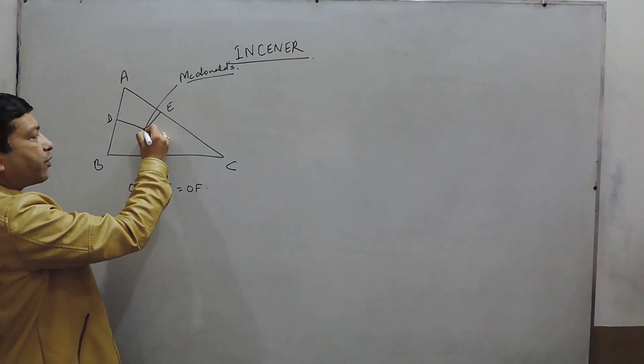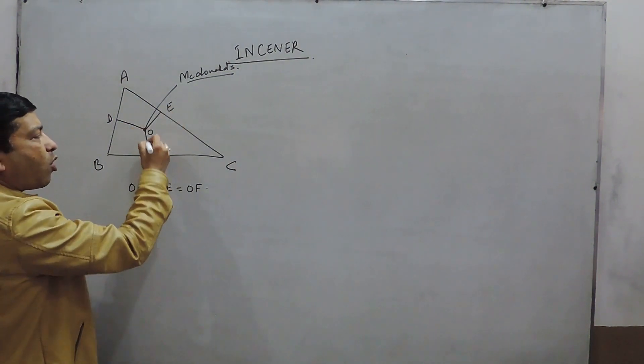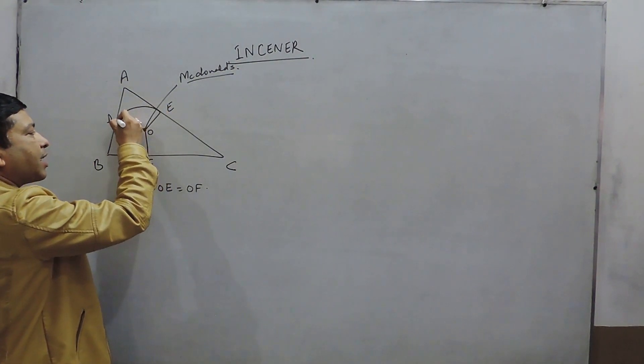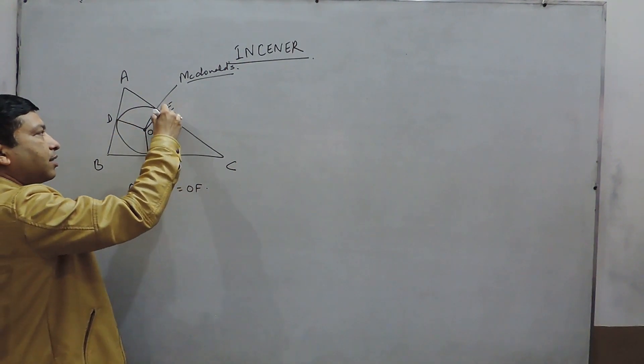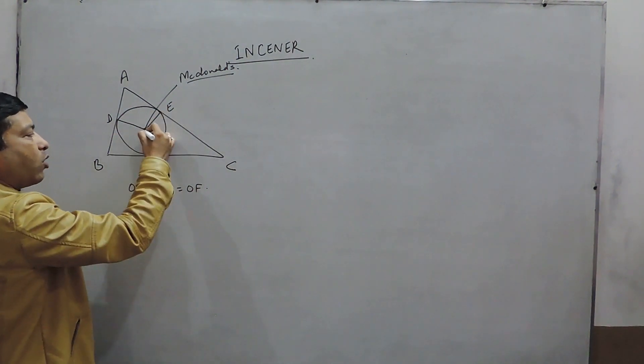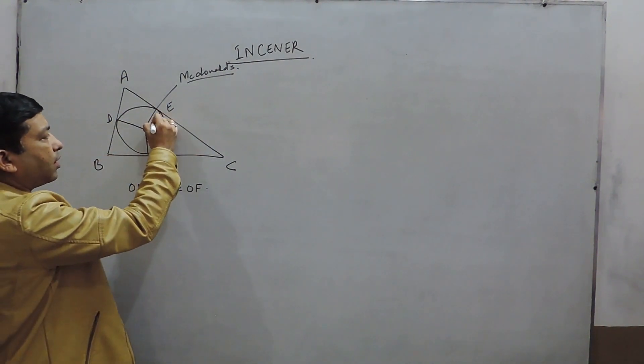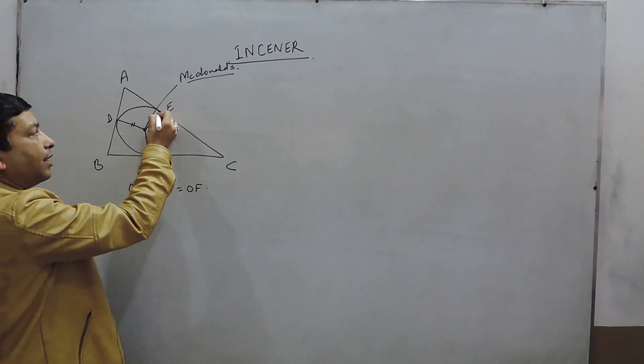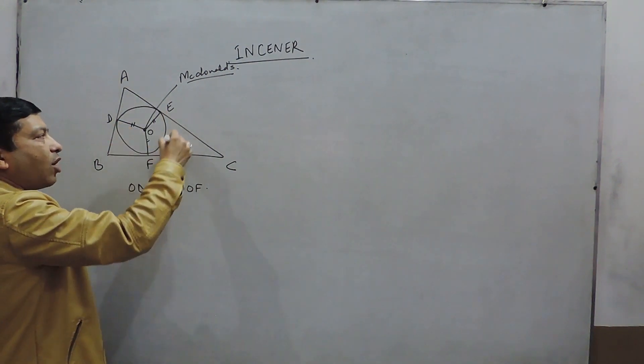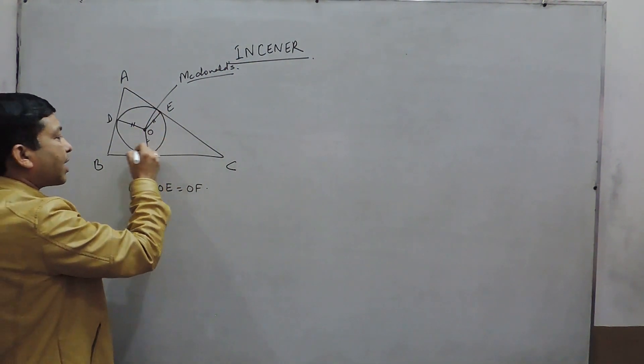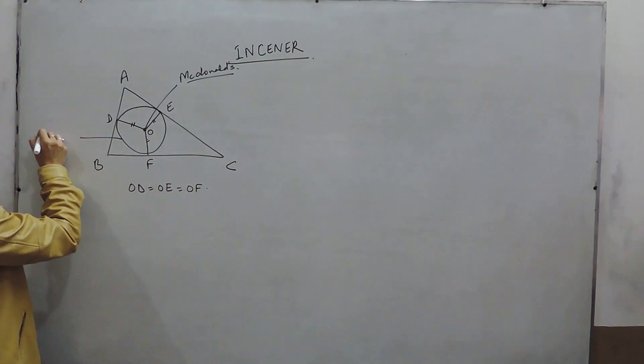If OD, OE, and OF are all the same, then we can construct a circle where OE, OD, and OF act as the radius. This circle touches all three sides and is known as the InCircle.